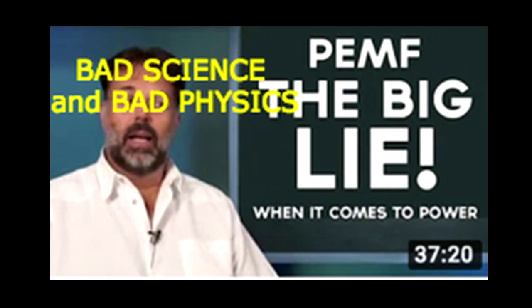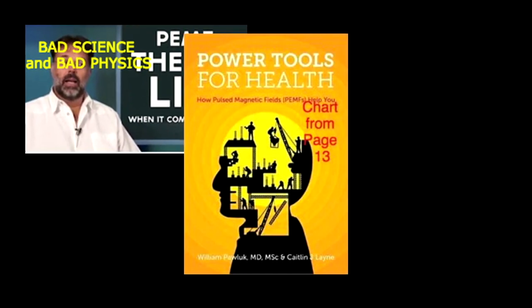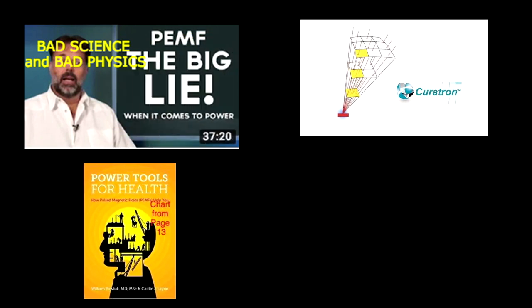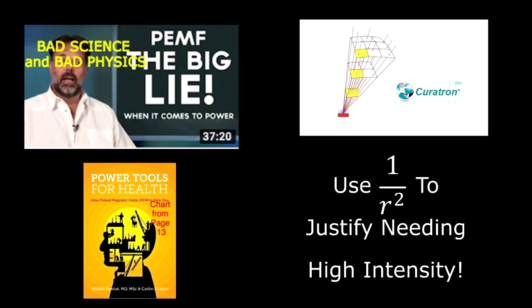A few examples: Marcus Freudelman, which I did a whole video, PEMF The Really Big Lie, Dr. Pollack, a very well-trusted and respected PEMF expert, companies like Curatron - they use this 1 over r squared relation in their books and articles to justify needing high-intensity.